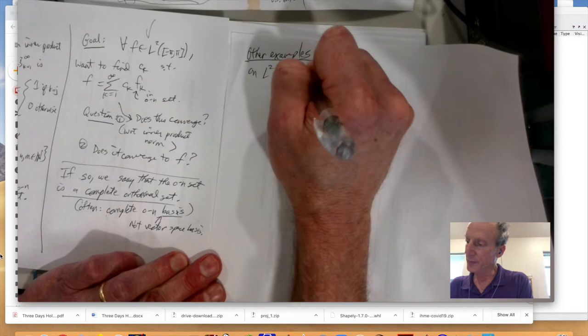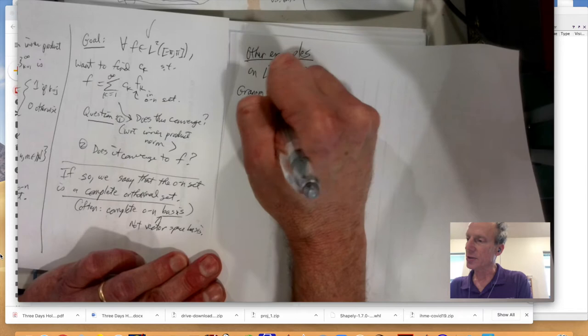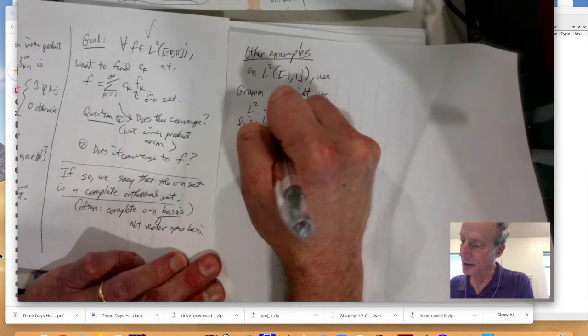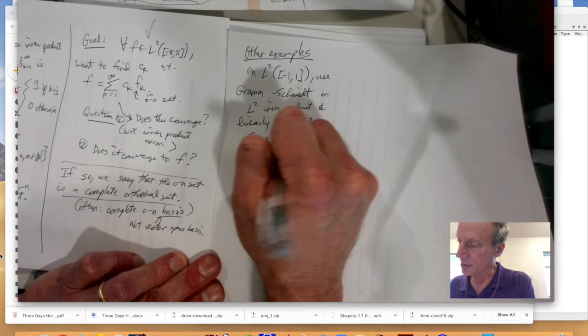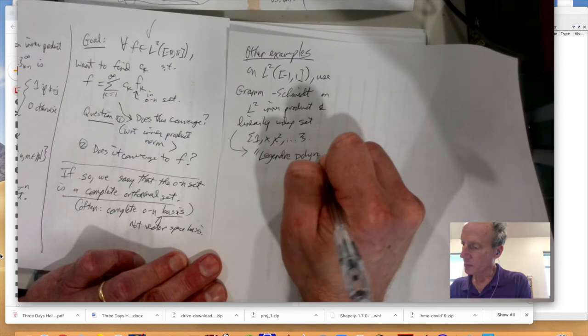So I'm going to show you some examples besides those. On L2 of negative one to one, use Graham-Schmidt. Remember that's the orthogonalization procedure to make vectors perpendicular, on L2 inner product and the linearly independent set 1, x, x squared, and so on. And then you get what are called the Legendre Polynomials.